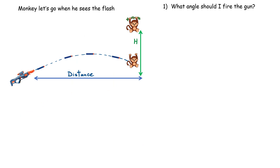The first thing we're going to do is set up equations of motion for the monkey and also for the bullet. The monkey lets go when he sees the flash, so that is basically at time equals zero. Everything starts at time equals zero. For the monkey, the only thing we're really interested in is: what is the monkey's position as a function of time? The monkey is basically only doing free fall.